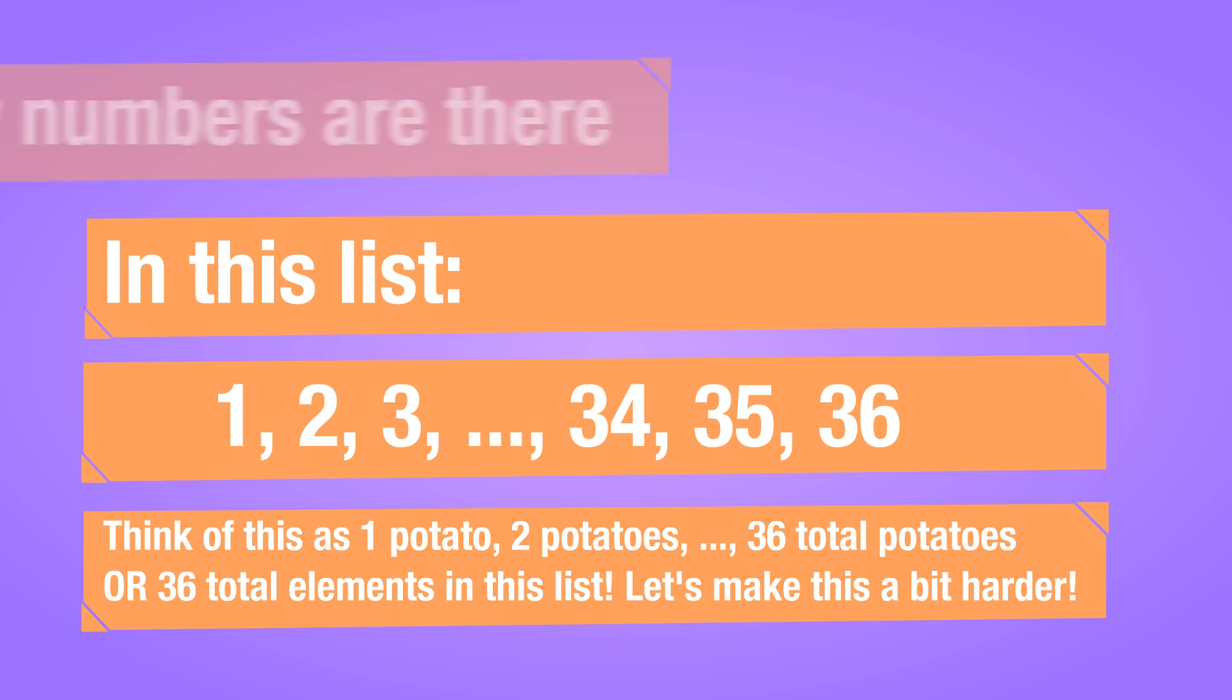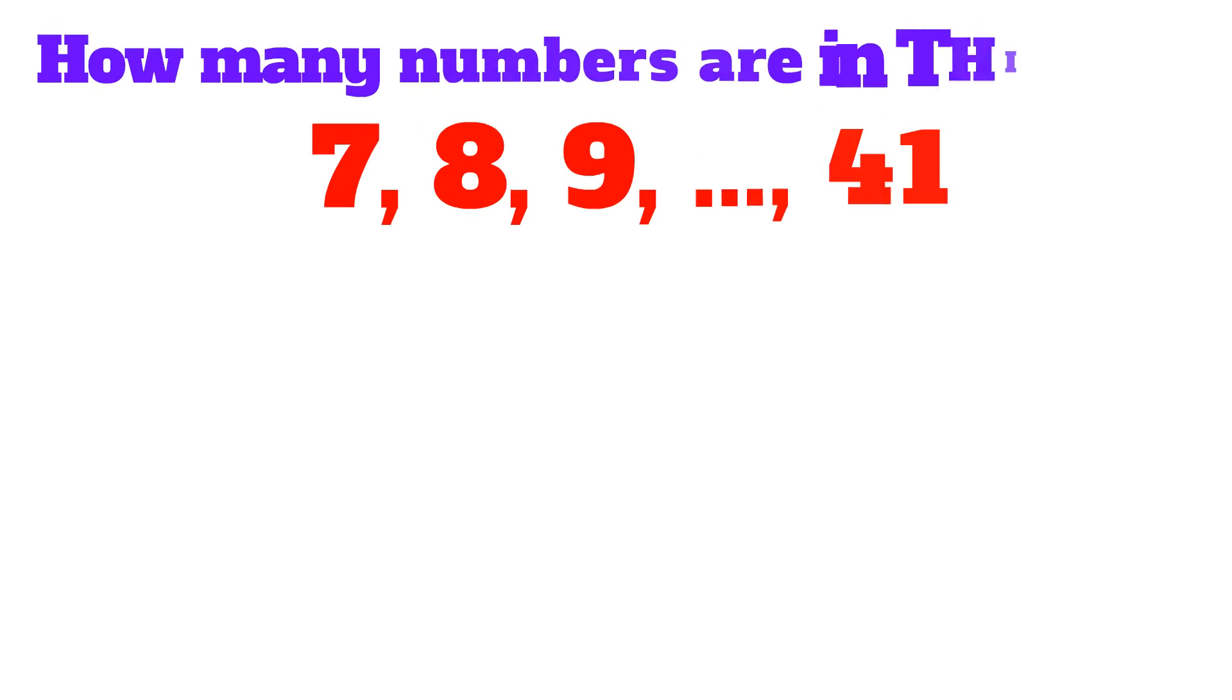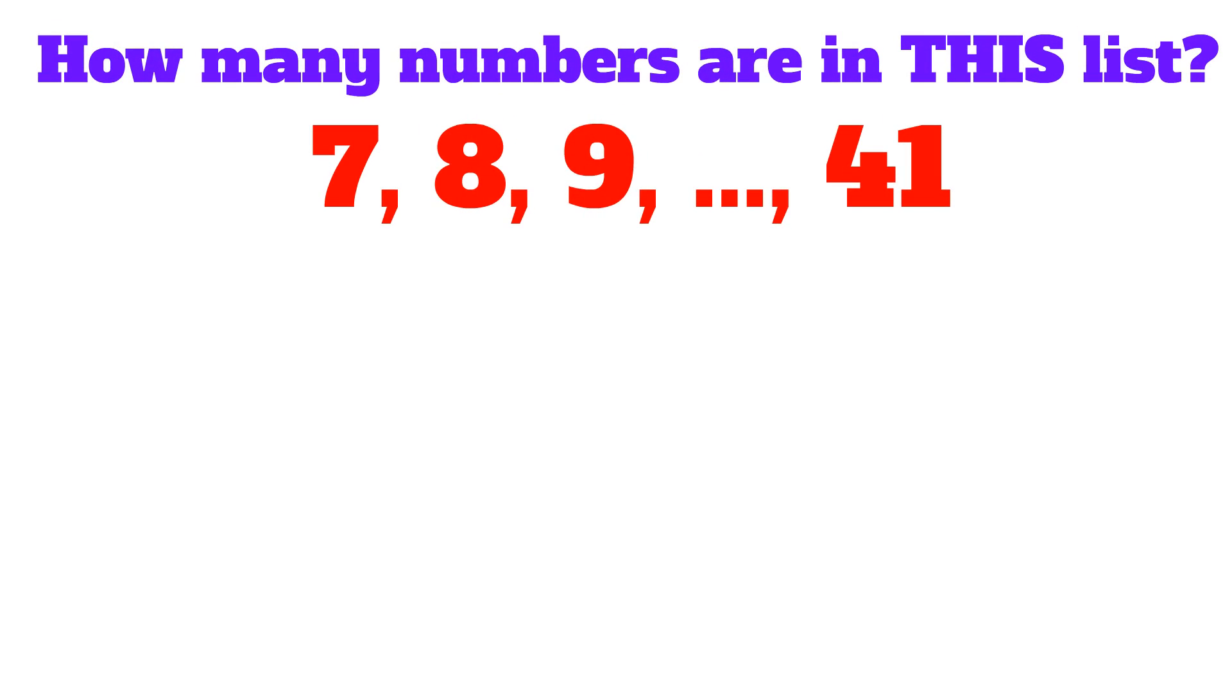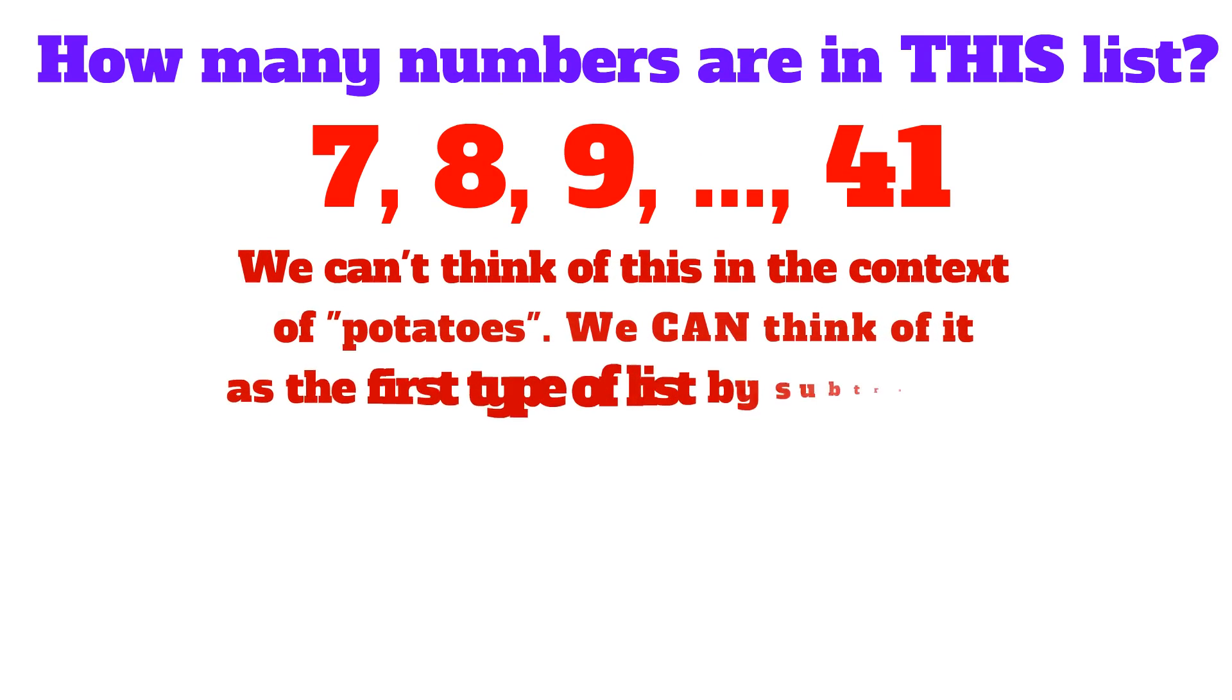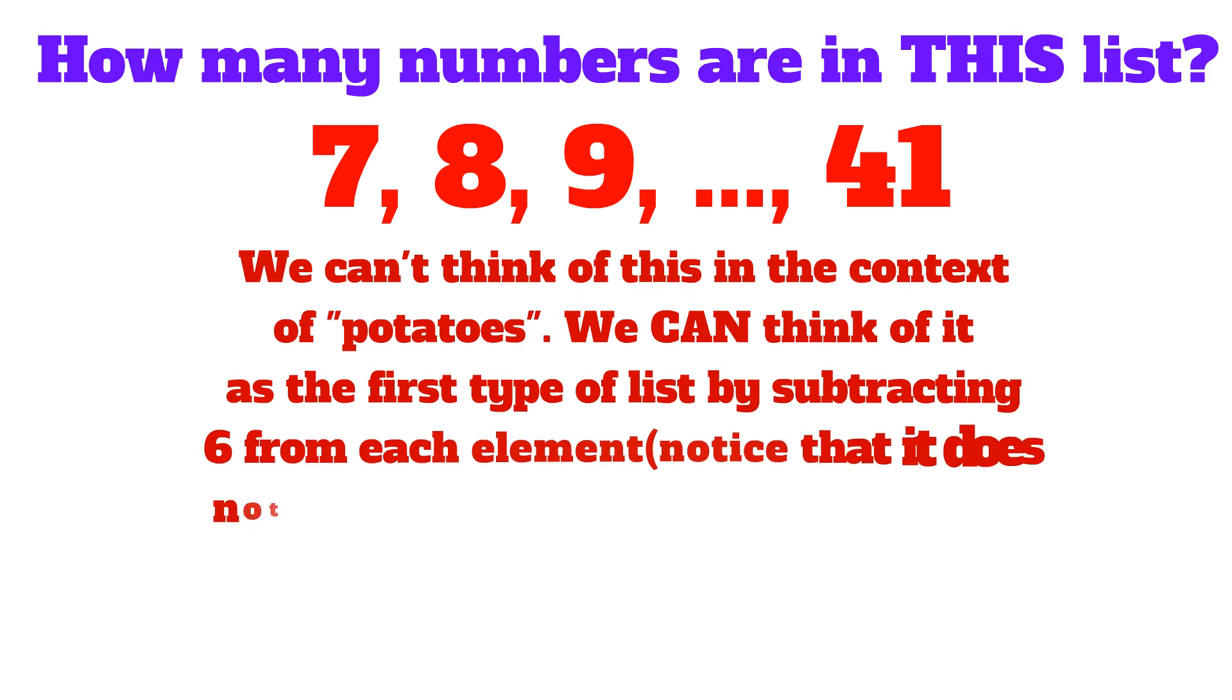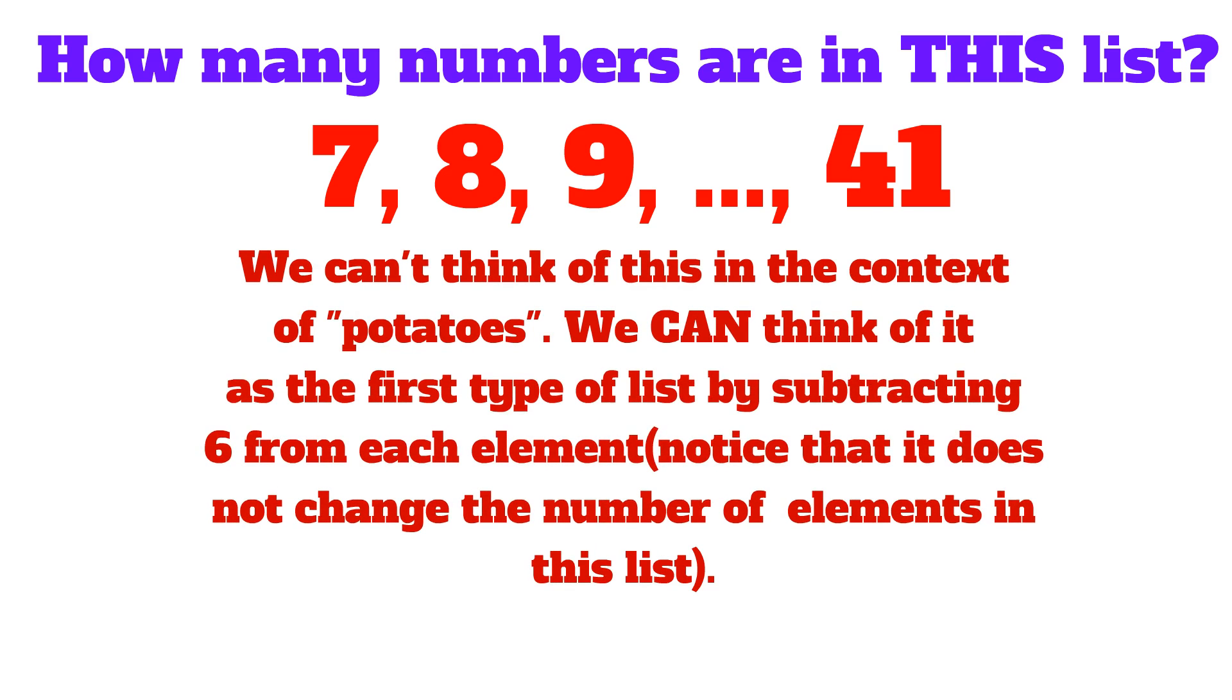Let's make this a bit harder. How many numbers are in this list? 7, 8, 9, and so on, all the way to 41. We can't think of this in the context of potatoes, but we can think of it as the first type of list by subtracting 6 from each element. Notice that that won't change the total number of elements in this list, since we're doing the same thing to each element. We're not adding any elements. We're not subtracting any elements.